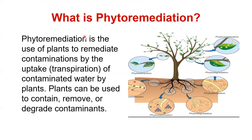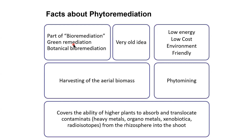Phytoremediation is the use of plants to remediate contamination through the uptake of contaminated water and soil by plants. A plant can be used to contain, remove, or degrade contaminants. Phytoremediation is a part of bioremediation — in bioremediation we also use microbes, but in phytoremediation we only use plants, so it is also called green remediation or botanical bioremediation.